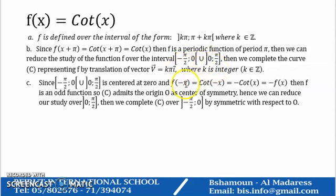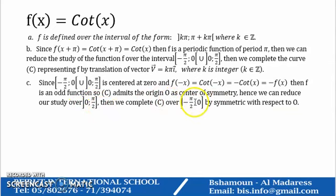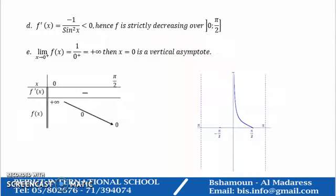And since the cotangent function is an odd function — since cotangent of (−x) equals minus cotangent of x — we can reduce our work further over (0, π/2), then complete it over (−π/2, 0) by symmetry with respect to the origin, and over its entire interval by the translation of vector v equal kπ.